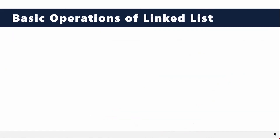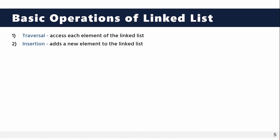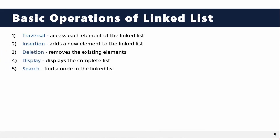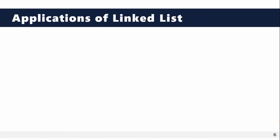The basic operations on a linked list are: traversal to access each element, insertion to add an element, deletion to remove an element, display using a display function, searching a node, and sorting the elements in order.